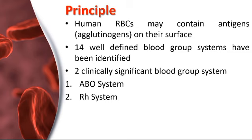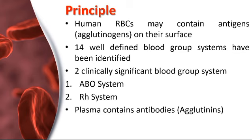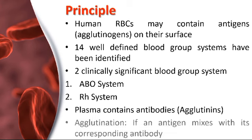Since red blood cells contain a series of antigens on their surface, plasma contains antibodies, which are also called agglutinins. In order to determine the blood group, the red blood cells are made to react with sera containing known antibodies. This process is called agglutination — the process that occurs if an antigen is mixed with its corresponding antibody. Agglutination can be seen through the naked eye.